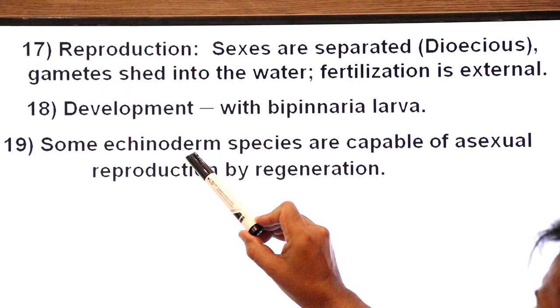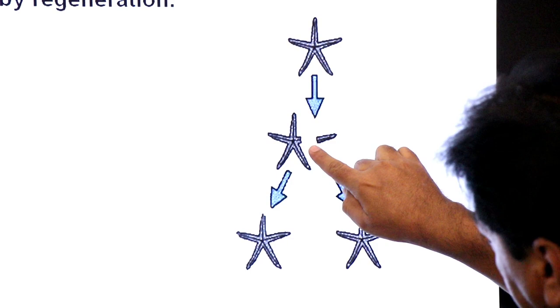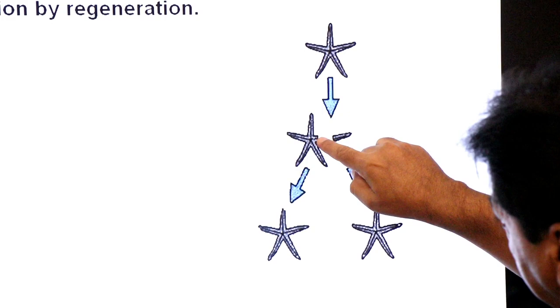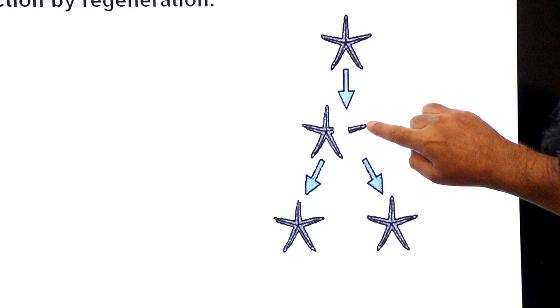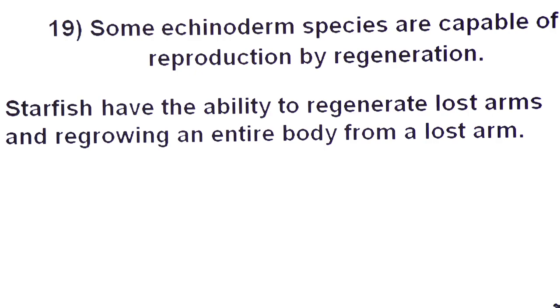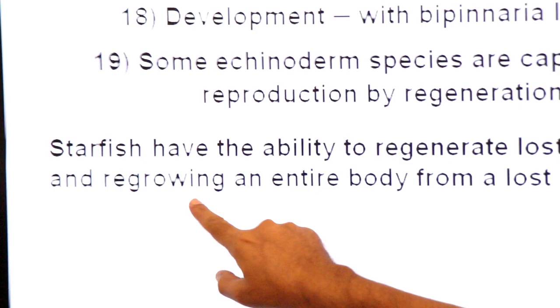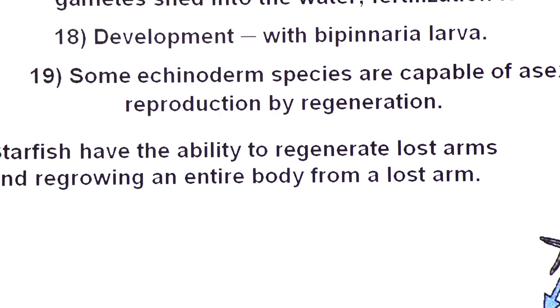And they have also great power of regeneration. That is asexual reproduction. Some echinoderm species are capable of asexual reproduction by regeneration. Regenerating the starfish. If starfish accidentally loses this arm, the starfish can regenerate. Starfish have ability to regenerate lost arm and regrow an entire body from a lost arm.